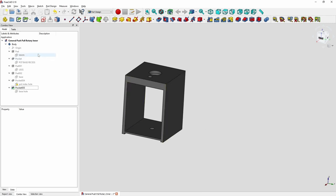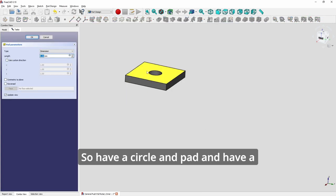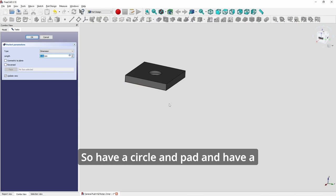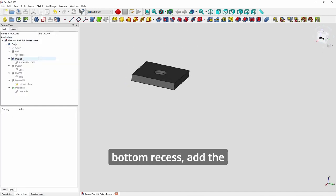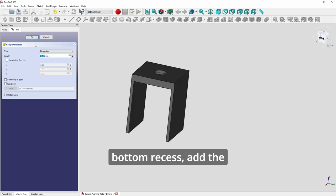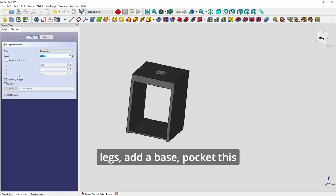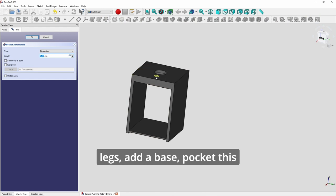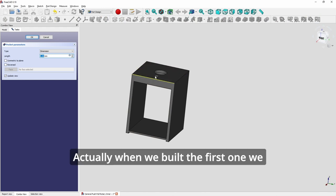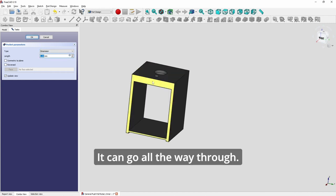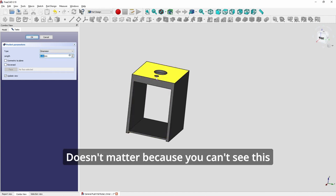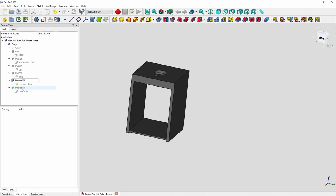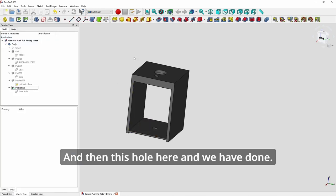Now we look at this inner bracket. We will have a circle and pad, have a bottom recess, add the legs, add a base. Pocket this one here. Actually when we built the first one we could have added a hole here as well, it can go all the way through. Doesn't matter because you can't see this, it's behind the panel. And then this hole here and we are done.